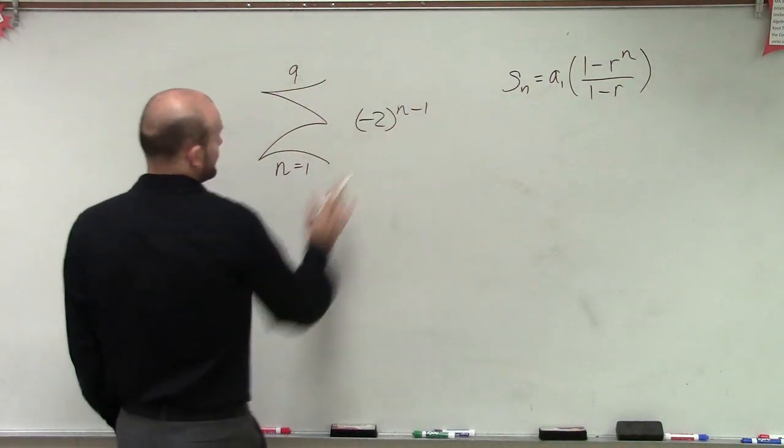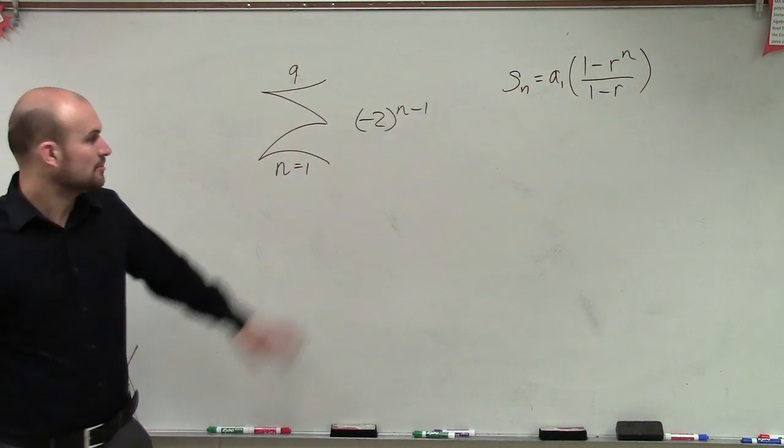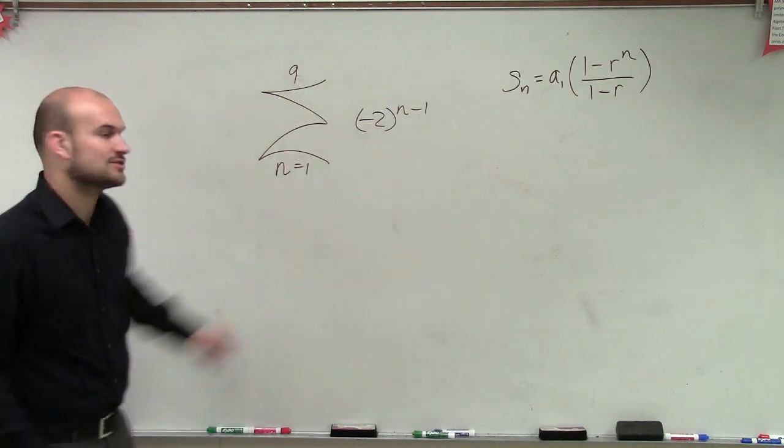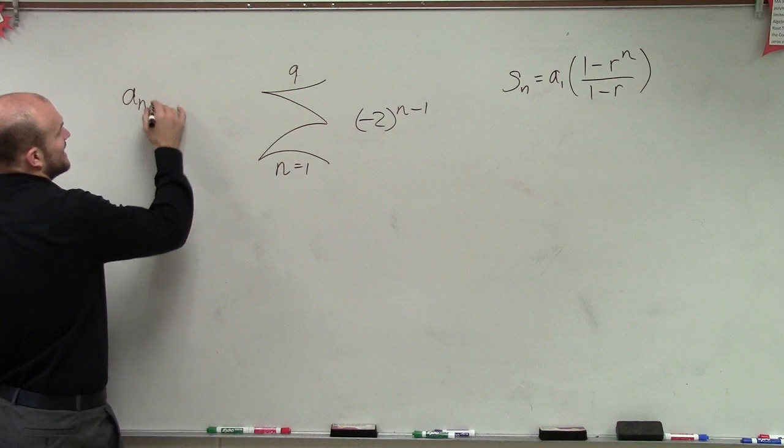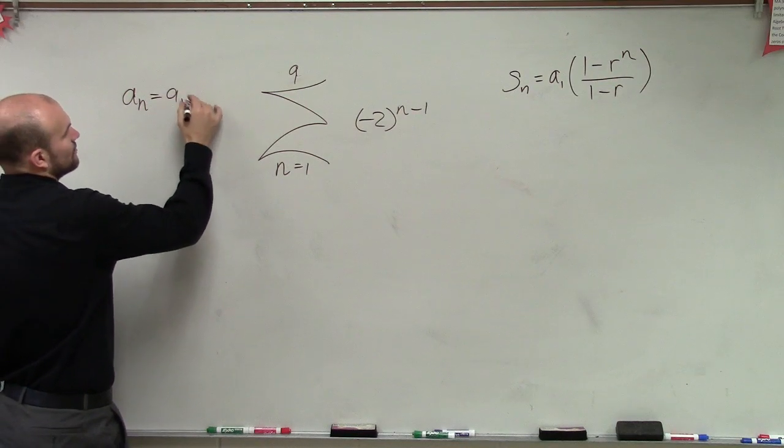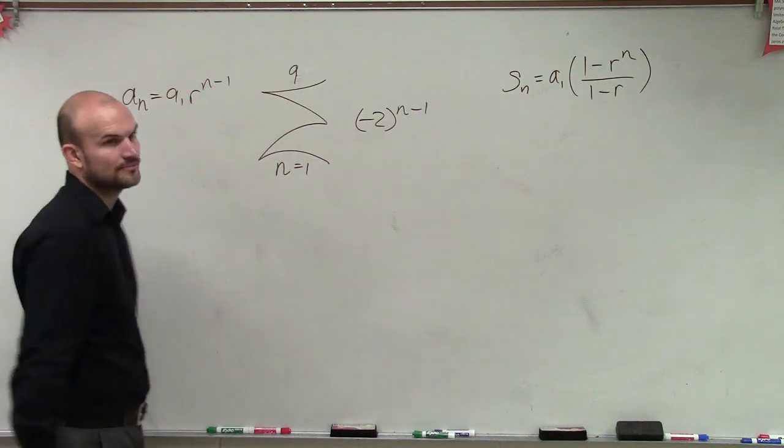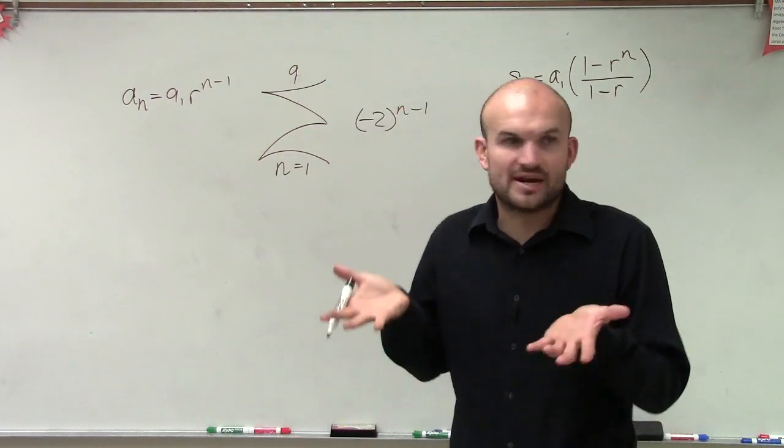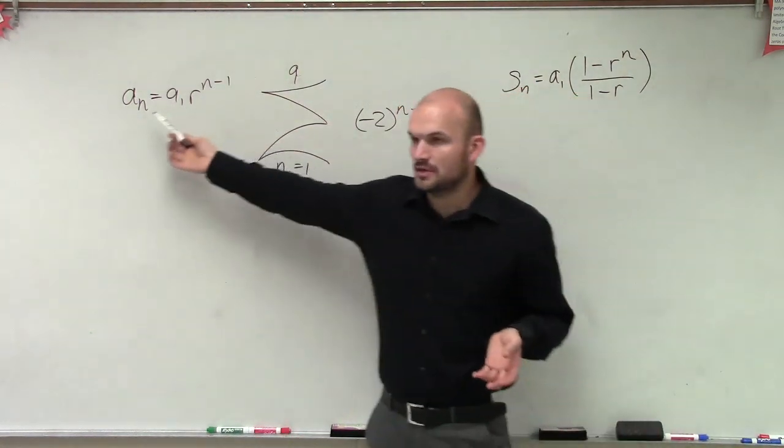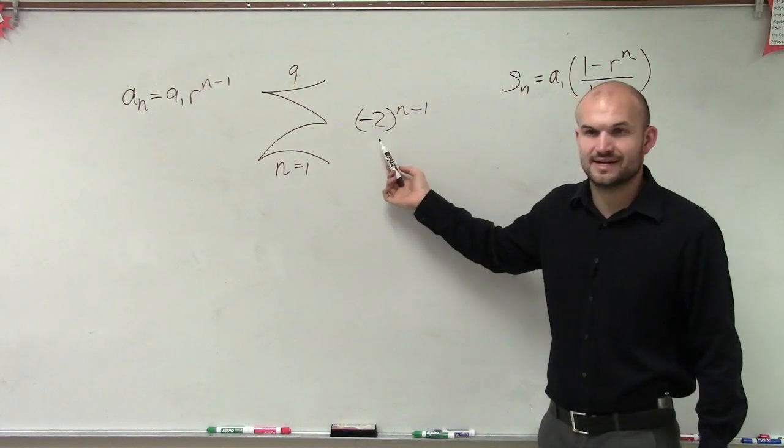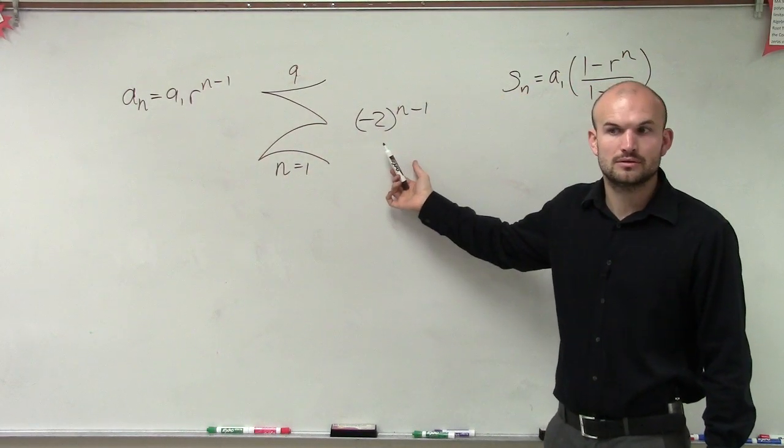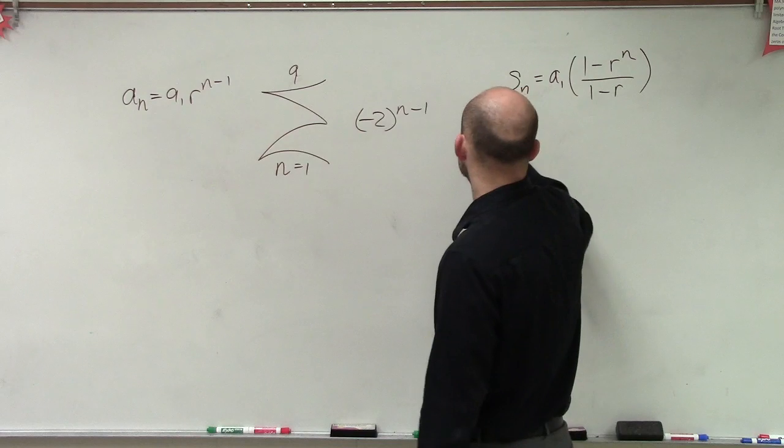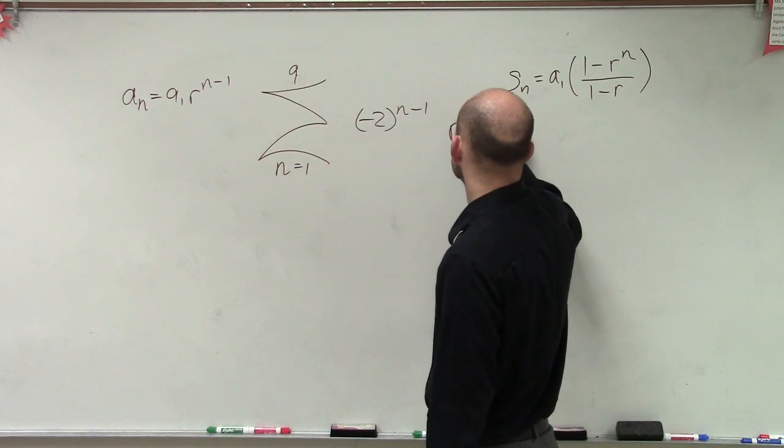Now, all we have is a rule. We don't have a given ratio. But we know our rule for a geometric sequence can be written as a sub n equals a sub 1 times r to the n minus 1. So our r is our base that's being raised to the power. Therefore, our r is going to equal negative 2.